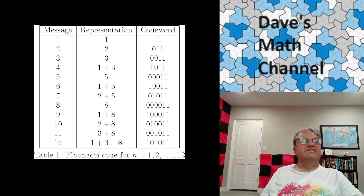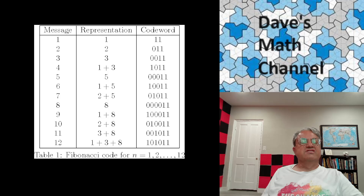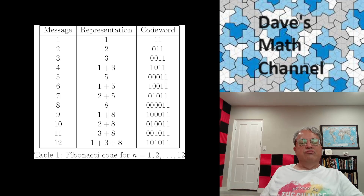The next example is 7: 7 is 2 plus 5, where 2 is F3 and 5 is F5. The last example shown is 12: 12 is 1 plus 3 plus 8, where 1 is F2, 3 is F4, and 8 is F6. On the right they write what's called a code word — another way of writing the Zeckendorf representation, almost like binary. I prefer to write them backwards and without trailing ones.